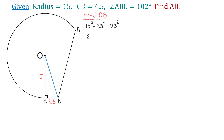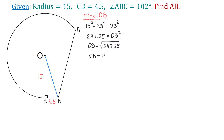The left side equals 245.25, so OB squared equals 245.25. To find OB, we take the square root of 245.25, which gives OB approximately 15.66 units.